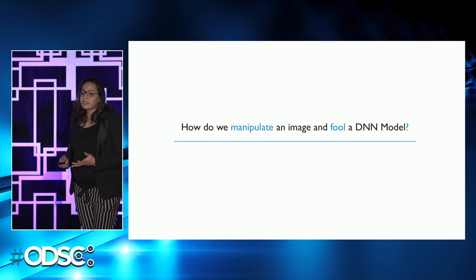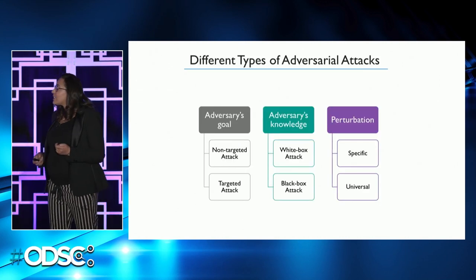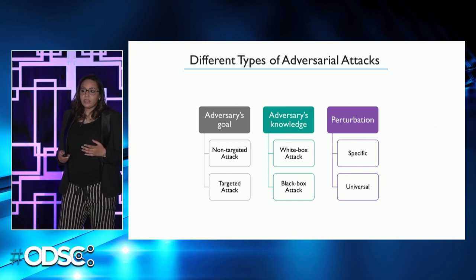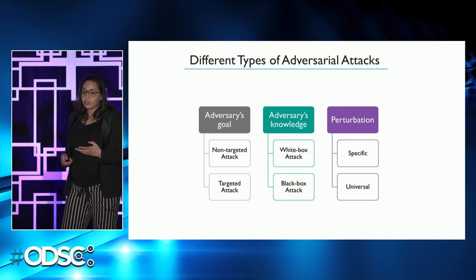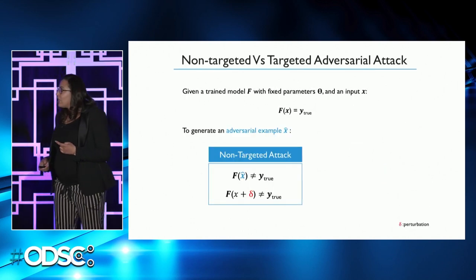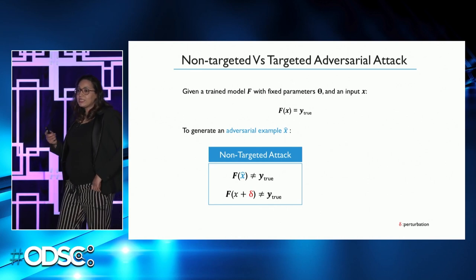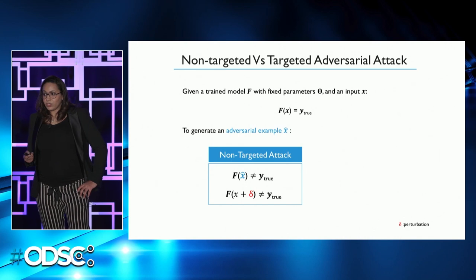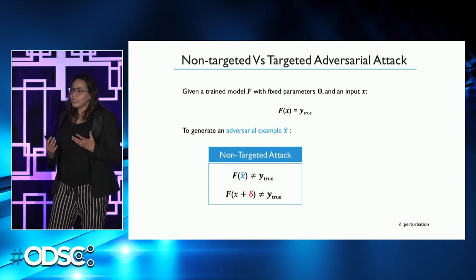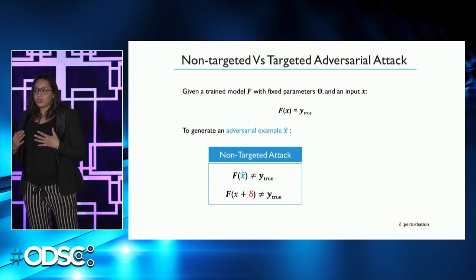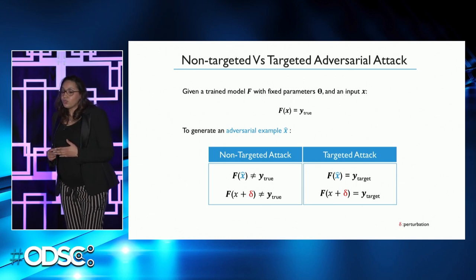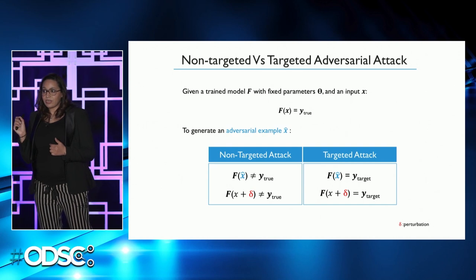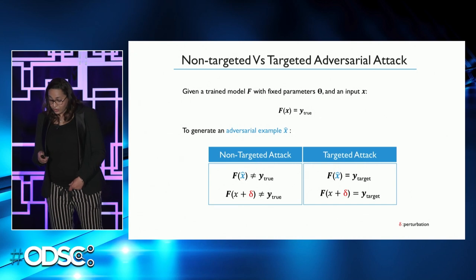So how can we manipulate an image and fool a deep neural network? There are different types of attacks. They differ based on the goal of the attacker, how much information the attacker knows about the victim model, and what type of perturbation is used — whether it is specific to an input image or a universal perturbation. In a non-targeted attack, the attacker manipulates the input image to make the classifier predict any incorrect class. In a targeted attack, the attacker manipulates the input image to make the classifier predict a very specific incorrect class chosen in advance by the attacker.